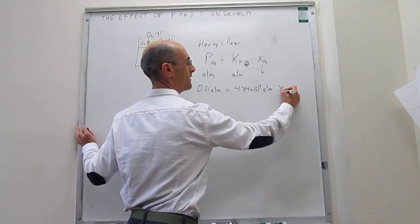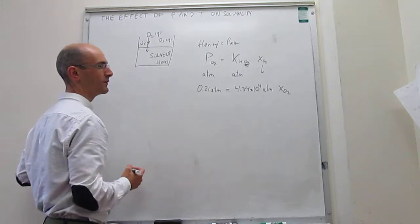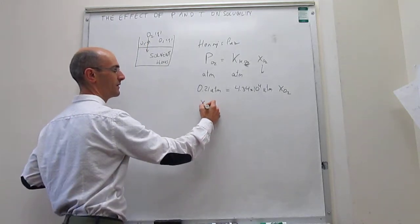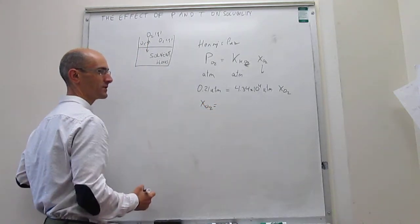From here, you can easily solve what the mole fraction of oxygen would be. And that mole fraction of oxygen is going to be very small, 4.8 times 10 to the minus 6.